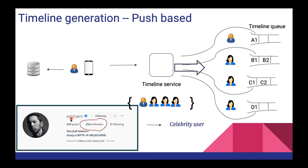But there is a catch. If there is a celebrity user — suppose Eminem posts something — he has 25 million followers. So whenever he posts something, he'll have to push that post into 25 million people's timeline queues, which is definitely not a good way and will take forever. So what we have to go for is a hybrid approach, which includes both pull-based and push-based.